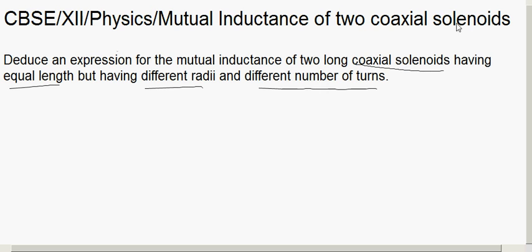No other quantities are given here; we can assume them. For example, the first solenoid has N1 number of turns and has a radius of R1, and so on. We'll assume each and every quantity and then derive the mutual inductance. So we have two solenoids with a common axis — one of radius R1 and the other of radius R2.